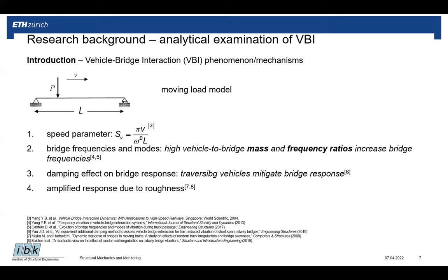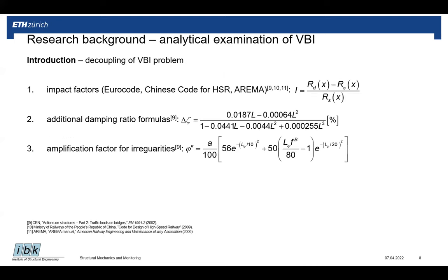Based on this simple but illustrative model, research managed to derive some very important conclusions. One very important parameter suggested was the speed parameter — the driving frequency of the load over the frequency of the bridge — which has been associated with resonance and cancellation phenomena. Other important conclusions relate to the effect of mass and frequency ratios on bridge frequencies and modes, the damping effect the vehicle has on bridge response, and the amplification effect of roughness on vehicle and bridge response.